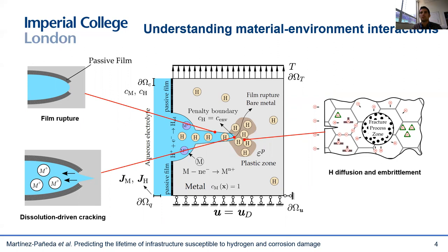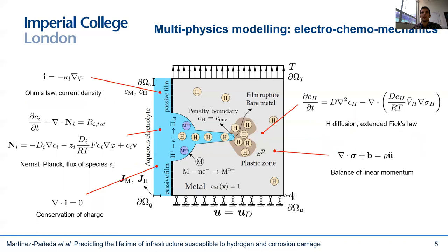However, I will try to convince you today that there are reasons for being optimistic, and that we have reached a point where we can use computer simulations to predict phenomena such as corrosion fatigue, hydrogen embrittlement, or pitting corrosion, leveraging on what we have learned in decades of experimental research. Essentially, there are two recent developments that make this possible, in my opinion.